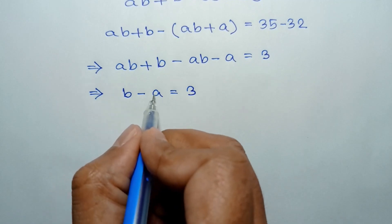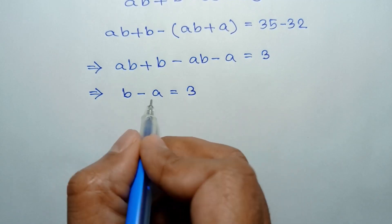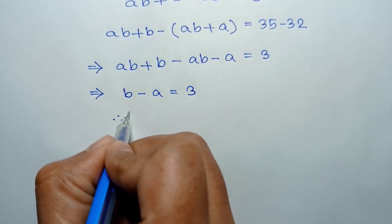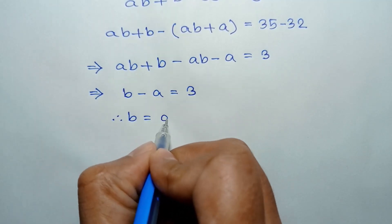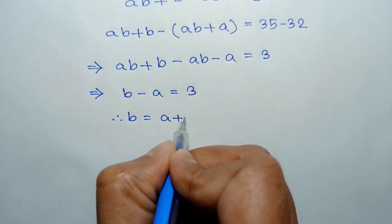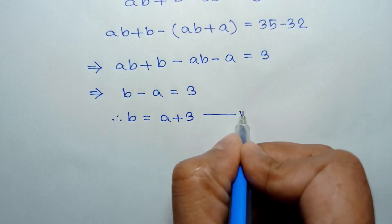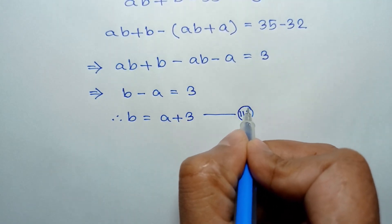Now, taking this negative A to the right side, we will have the value of B is equal to A plus 3. Let's call it equation number 3.